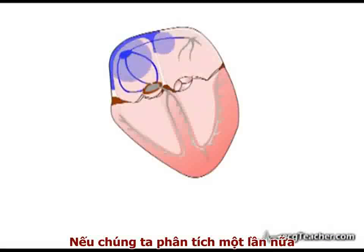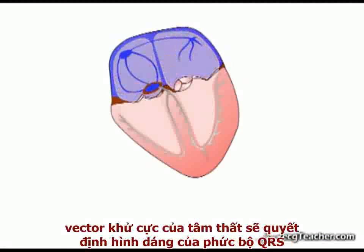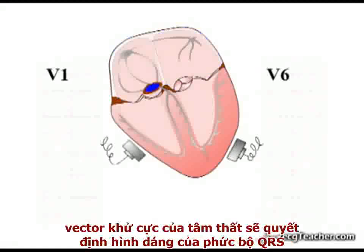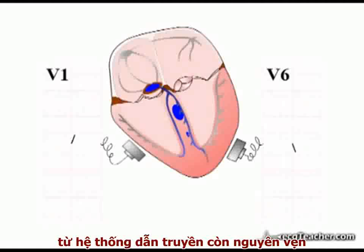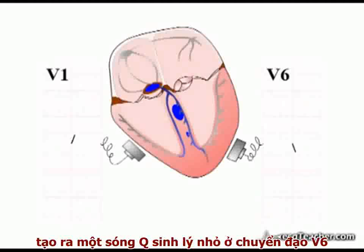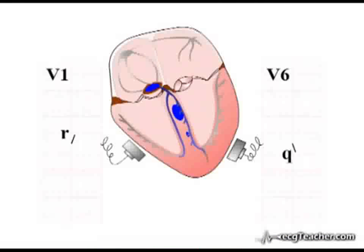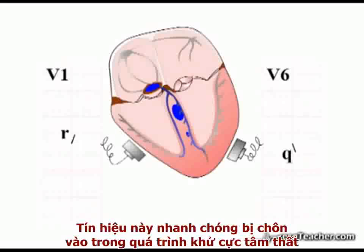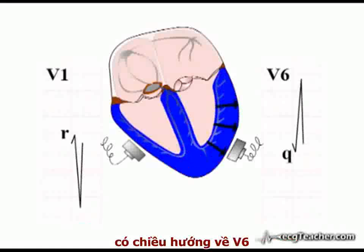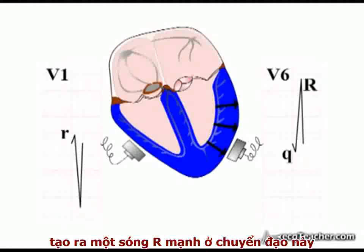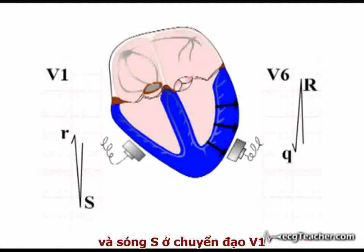If we analyse the major ventricular depolarisation vectors dictating the QRS complex morphology, the early flow of depolarisation in the mid-zone of the intraventricular septum from an intact left bundle branch produces a small physiological Q wave in lead V6 and R wave in lead V1. This signal is rapidly overwhelmed by the onset of left ventricular depolarisation which, moving towards V6, produces a strong R wave in this lead and S wave in lead V1.